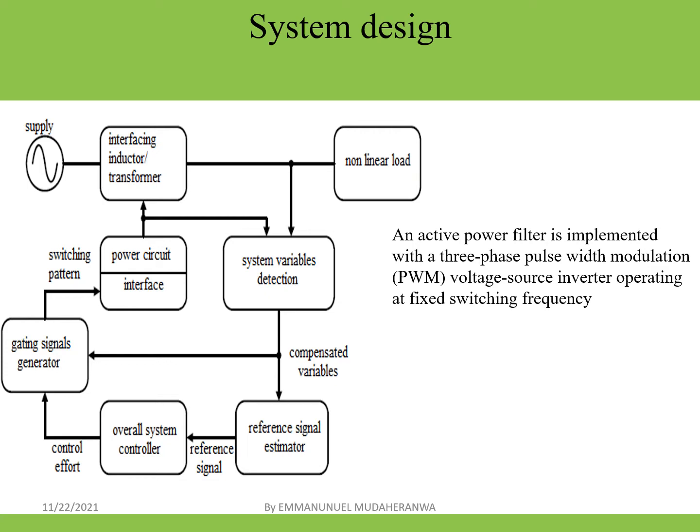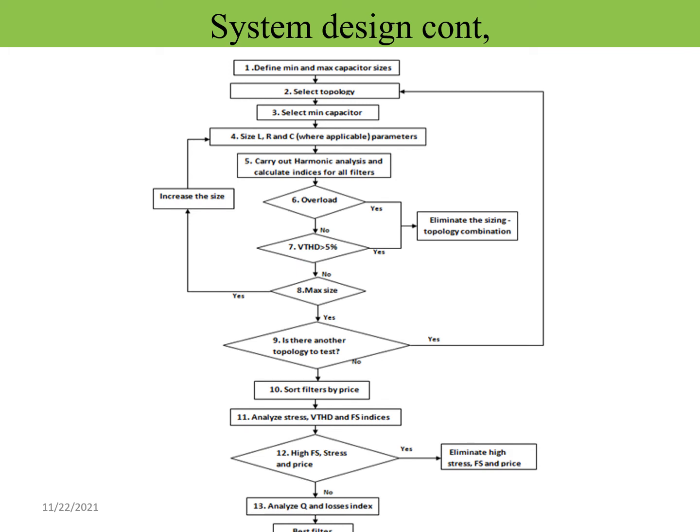To show how harmonics in a power system can be reduced or mitigated, here is a diagram of the system design. In this system, an active power filter is implemented with a three-phase pulse-width modulation voltage source inverter operating at a fixed switching frequency. This figure shows how the system works. To complete the system design, here is the flow chart of how the components work.